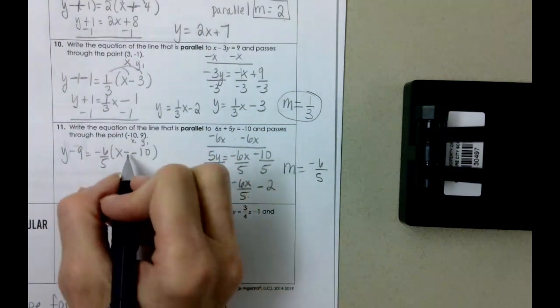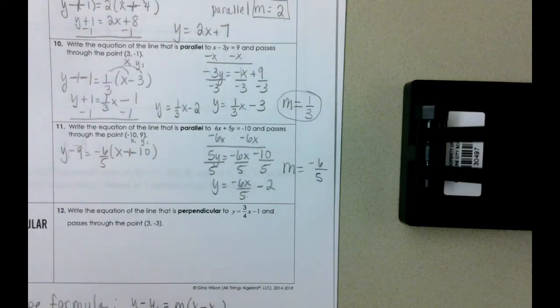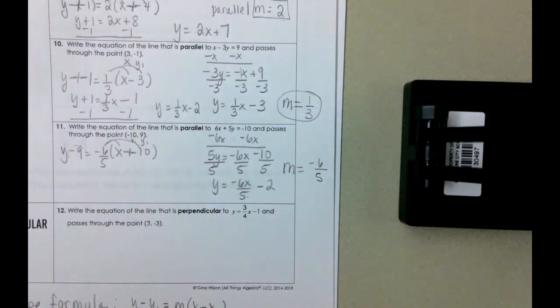Double negative is positive and we're going to distribute. Use decimals, use your calculator.